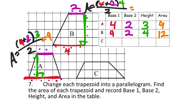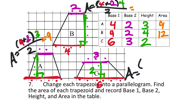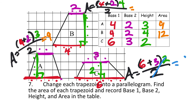And this last one — trapezoid C. Base one is one, two, three, four, five, six — six units. Base two, which is the top, is one, two, three — three units. The height, anywhere I can make a 90-degree angle between the two parallel sides, is one, two — two units. Area: add the two bases — six plus three is nine — multiply by height two, that's 18, divided by two equals nine square units. Or if you cancel the twos, six plus three is nine directly — nine square units either way.